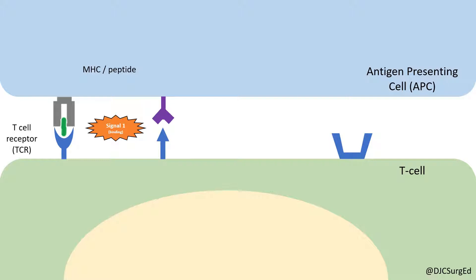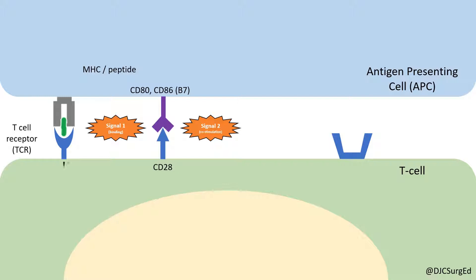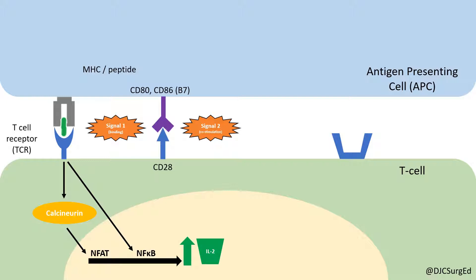Multiple co-stimulatory molecules, including the interaction of CD28 on T cells with B7 on antigen-presenting cells, are activated, comprising signal number 2. This leads to a cascade of signaling pathways, including the activation of NF-kappa-B and NF-AT via the calcineurin pathway and subsequent production of IL-2.